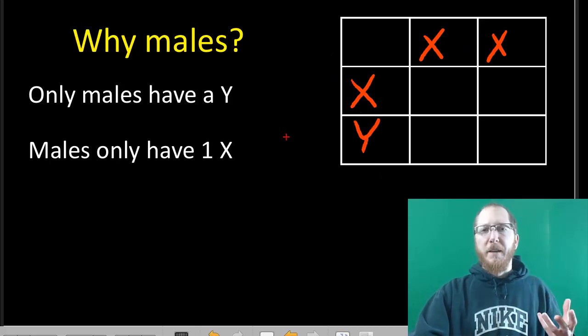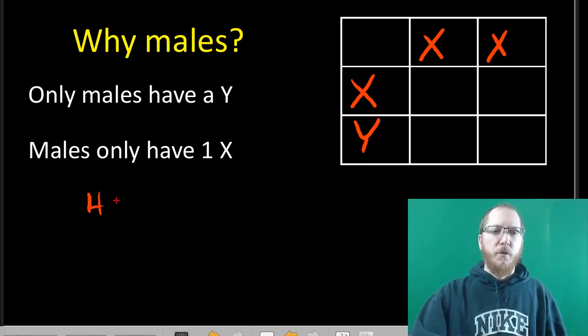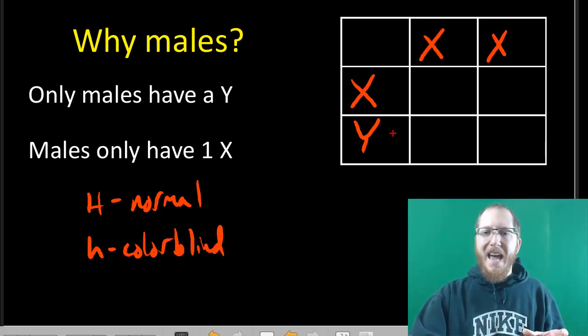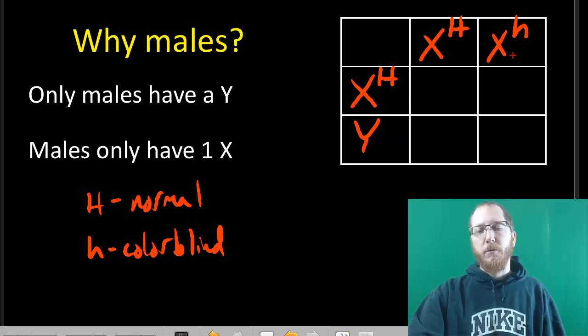Now if we do something like color blindness, which happens to be an X-linked recessive trait, we can use H's, so big H can be normal vision, and we can say little h is going to be colorblind. These are our two alleles. Now this is only on the X chromosome, so this Y will not have any H's. Let's say the male's healthy, he's not colorblind. Let's say the mom's healthy, she's not colorblind, but she's a carrier, she's a heterozygote.